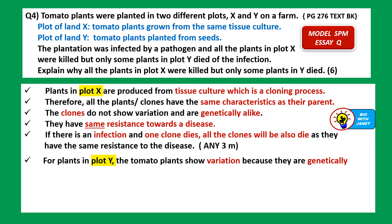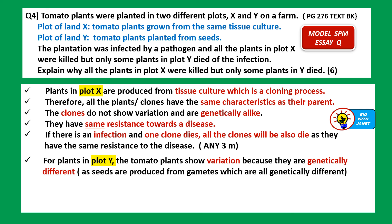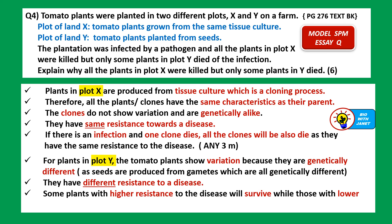For plants in plot Y, the tomato plants show variation because they are genetically different. The seeds are produced from fertilization by male and female gametes, which are produced through meiosis — where there's crossing over and random arrangement of homologous chromosomes on the metaphase plate. So they have different resistance to the disease and are not all genetically alike. Some plants with higher resistance to the disease will survive, while those with lower resistance may die.